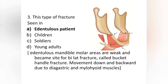This is also called bucket handle fracture — an important point. This bilateral fracture at the molar area of edentulous patients is called bucket handle fracture. Its movement after fracture is downward and backward, due to the digastric and mylohyoid muscles.